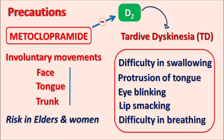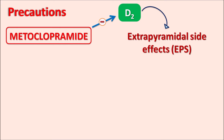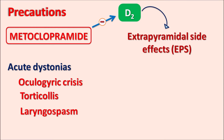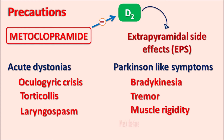Metoclopramide can also produce other extrapyramidal side effects due to D2 receptor blockade, including acute dystonias — disturbances in muscle tone — resulting in conditions like oculogyric crisis (involuntary eye movements), torticollis (twisting of the neck), and laryngospasm (difficulty eating). Parkinson-like symptoms such as bradykinesia, tremor, muscle rigidity, and mask-like face can also be observed. If tardive dyskinesia develops, the drug should be immediately withdrawn and replaced with an alternative.